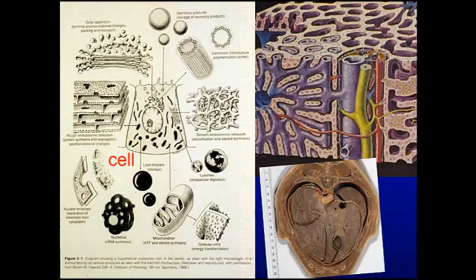Here we see a cell with a nucleus and various organelles. Today we're going to talk about the various organelles. This is the centriole, made of microtubules. We have a smooth endoplasmic reticulum — a series of vesicles. A rough endoplasmic reticulum, roughed by ribosomes.